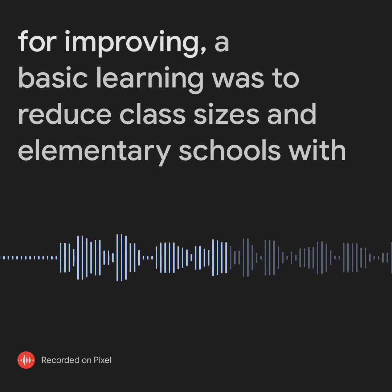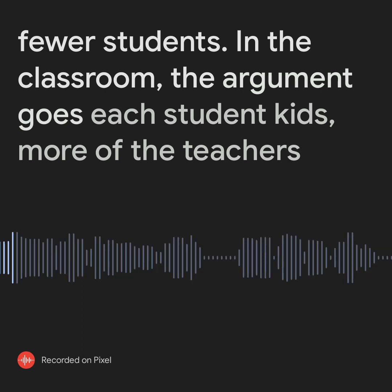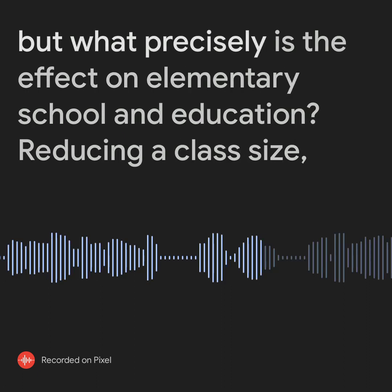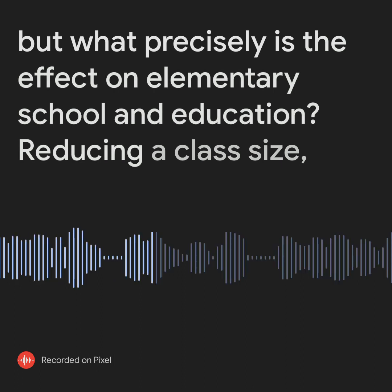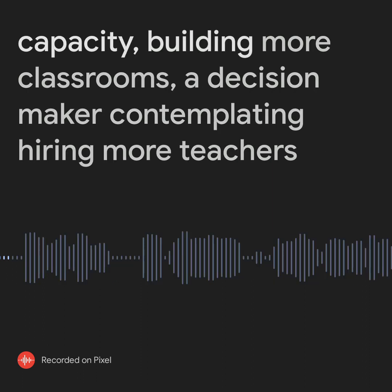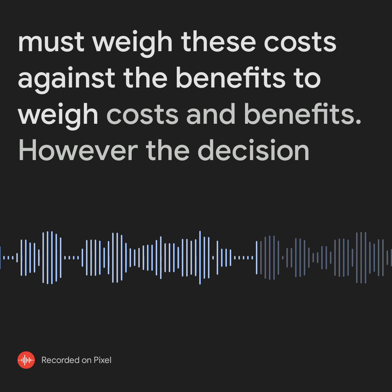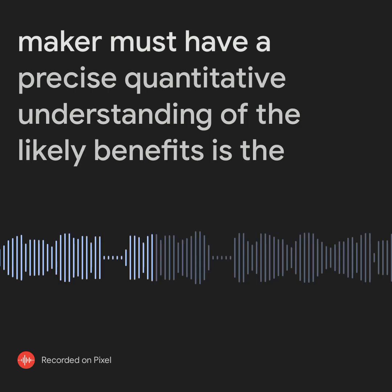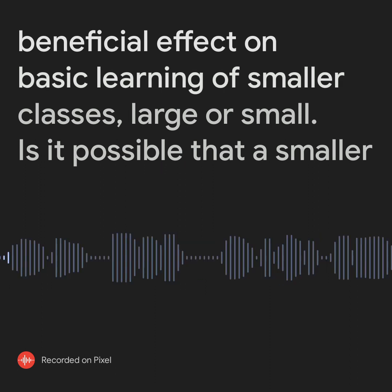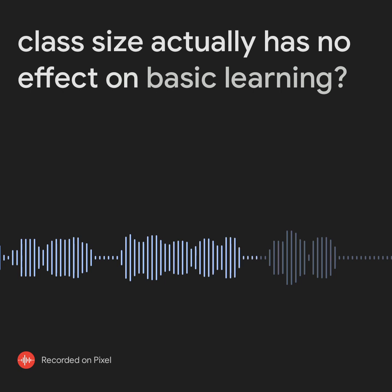One prominent proposal for improving basic learning is to reduce class sizes at elementary schools. With fewer students in the classroom, the argument goes, each student gets more of the teacher's attention, there are fewer class disruptions, learning is enhanced, and grades improve. But what, precisely, is the effect on elementary school education of reducing class size? Reducing class size costs money — it requires hiring more teachers, and if the school is already at capacity, building more classrooms. A decision-maker contemplating hiring more teachers must weigh these costs against the benefits. To weigh costs and benefits, however, the decision-maker must have a precise quantitative understanding of the likely benefits. Is the beneficial effect on basic learning of smaller classes large or small? Is it possible that smaller class size actually has no effect on basic learning?